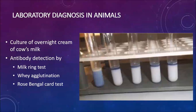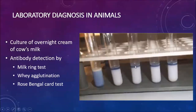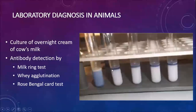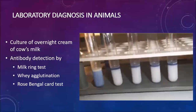For laboratory diagnosis in animals, cows' milk can be cultured — the milk is allowed to form cream overnight and that cream is cultured. Antibodies in animals can be detected by three methods: the milk ring test, the whey agglutination test, and the Rose Bengal card test. In the milk ring test, colored Brucella abortus suspension is added to the animal's milk; if antibodies are present, antigen-antibody complexes float to the top as a ring (positive), while a negative result shows the whole milk turning blue. The whey — the clear fluid after curdling — can also be used for agglutination.